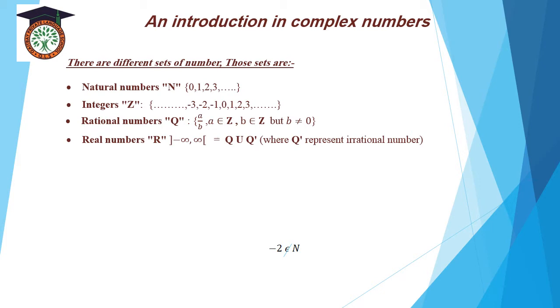What is the meaning of Q-dash? Q-dash represents the irrational numbers. Example 1: find in N — what is the meaning of N? Natural numbers.